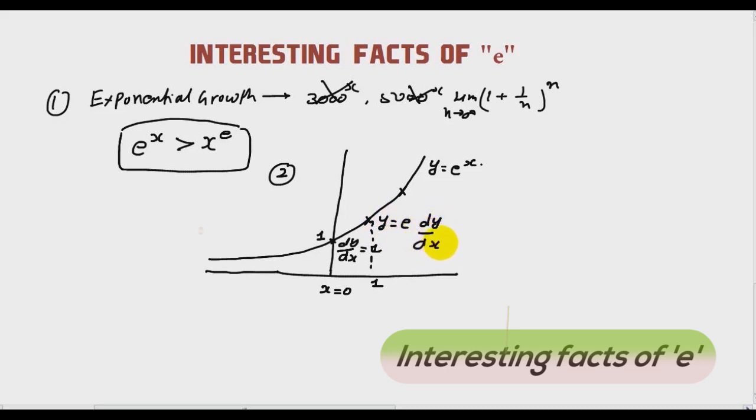If you reach here, let's say 1, then the y is equal to e and dy by dx is equal to e. Such a unique thing. That's why we have d by dx is e to the power x and integration of e to the power x is e to the power x.